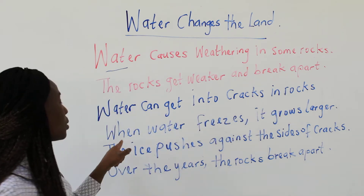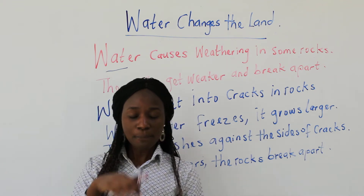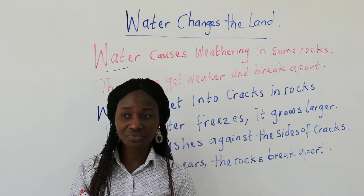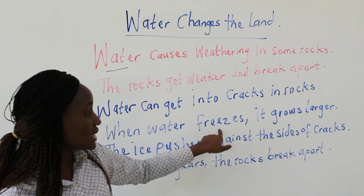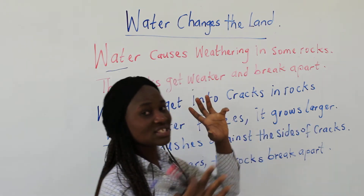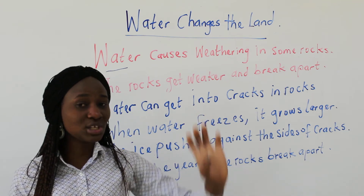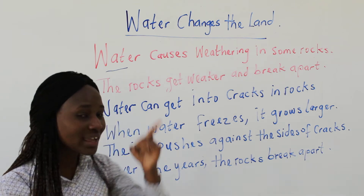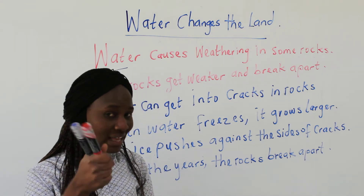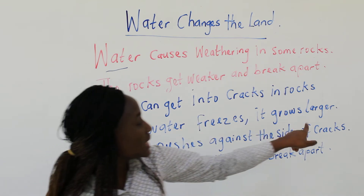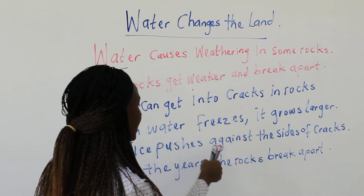When water freezes, it grows bigger. You can try this at home — put water in a bag and put it in the freezer for maybe 12 to 15 hours. When you bring it out, you'll realize it has grown bigger. When water freezes, it grows larger than its normal size. You can even check the weight on a scale. Remember, water can change to solid, liquid, and gas — and when water changes to solid, it grows larger.